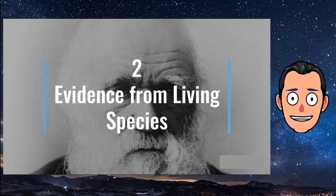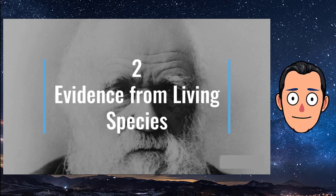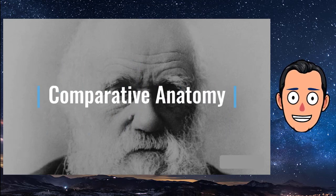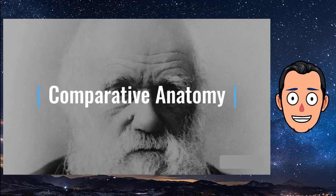Evidence from living species: Just as Darwin did, today's scientists study living species to learn about evolution. They compare anatomy, embryos, and DNA of modern organisms to understand how they evolved. Comparative anatomy is the study of similarities and differences in the structures of different species. Similar body parts may be homologies or analogies, and both provide evidence for evolution.